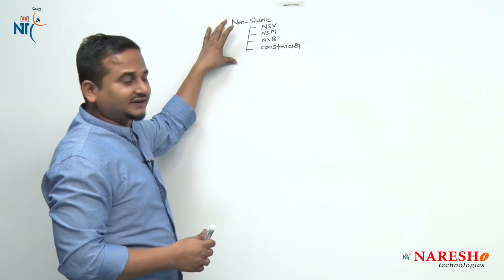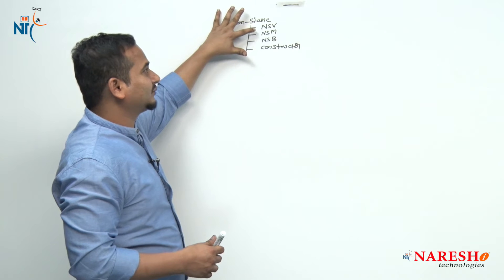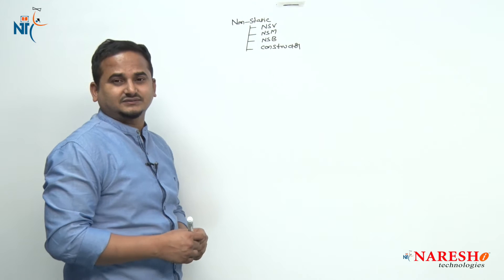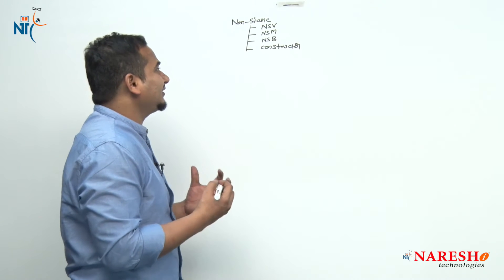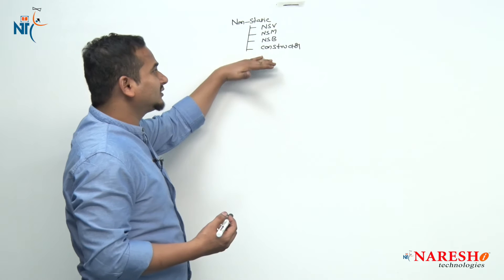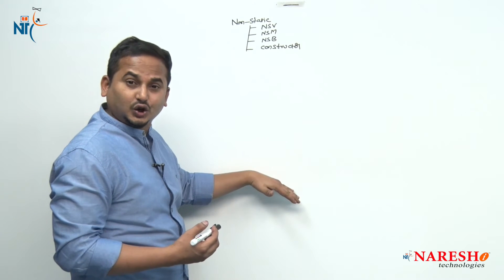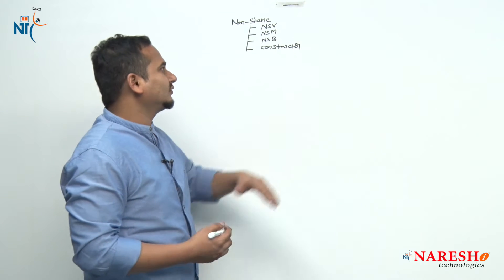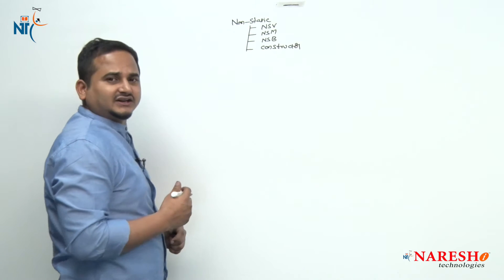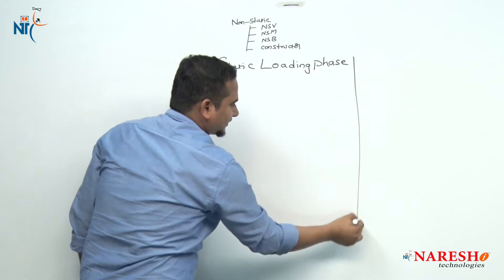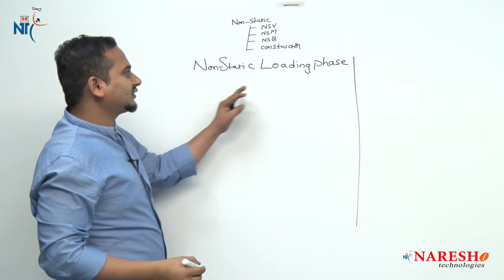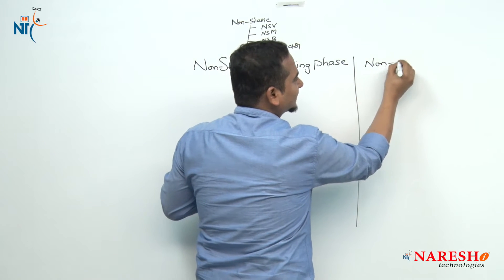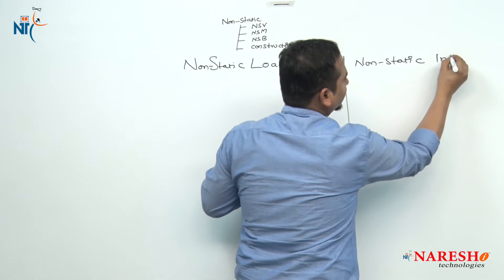Whenever we create an object for a particular class, all this data is going to be loaded as well as initialized. First, the non-static data loading phase. After that, once the loading phase is successfully completed, then control goes to the non-static initialization phase.